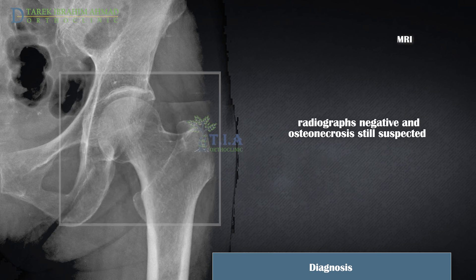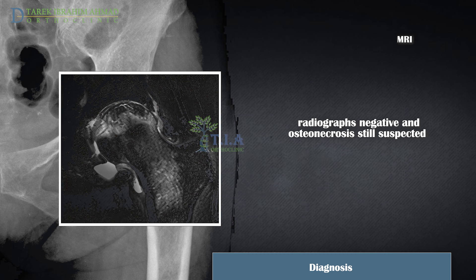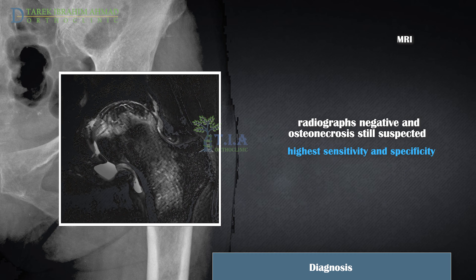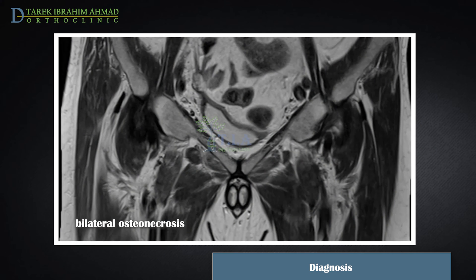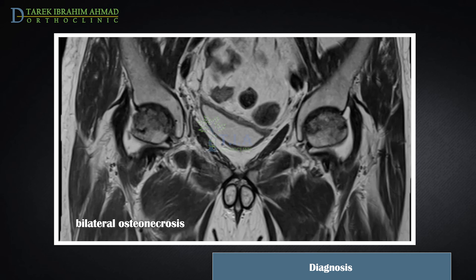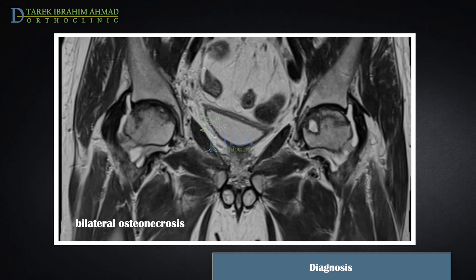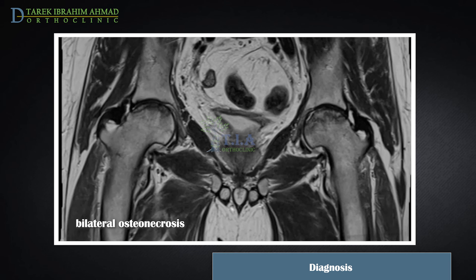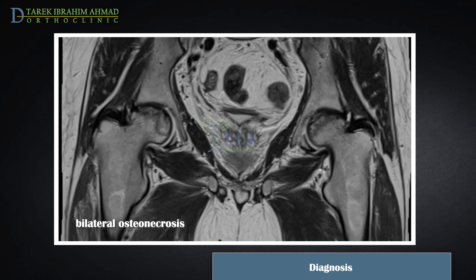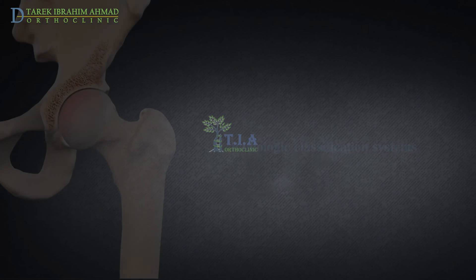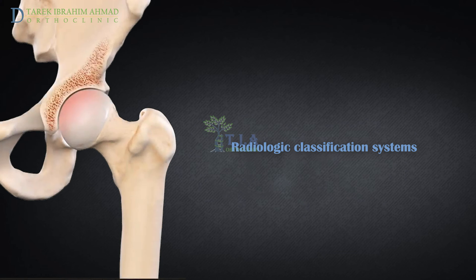MRI of the affected joint should be performed if radiographs are negative and the medical history supports a suspicion of osteonecrosis. MRI has the capability to pick up very early stage osteonecrosis before symptoms have started, and is useful for determining how much bone is involved. It is also extremely useful for evaluating the opposite hip, as osteonecrosis can develop in both hips, particularly where a systemic risk factor is present.